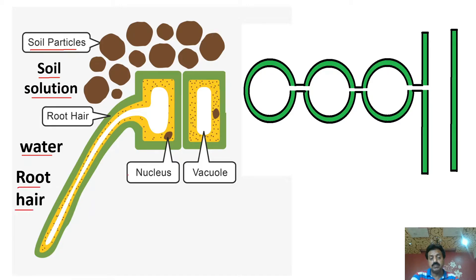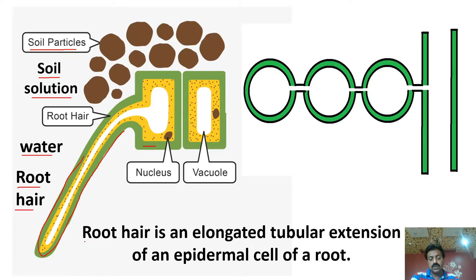Here is a root hair — an elongation which is called an elongated tubular extension of an epidermal cell of the root.